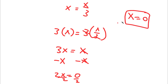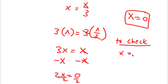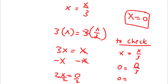So that's two ways of solving this problem. Now to check: start with x is equal to x over 3. x is equal to 0, so I have 0 is equal to 0 over 3. 0 divided by 3 is simply 0. So 0 equals 0, meaning my solution is right.